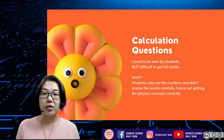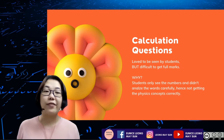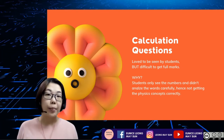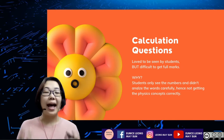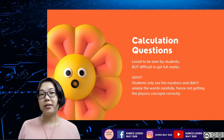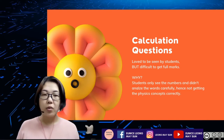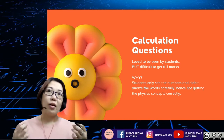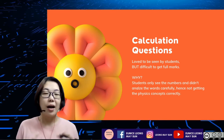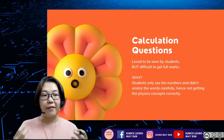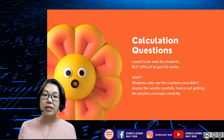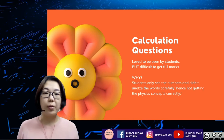It's loved to be seen by students, but it's going to be very difficult to get full marks. Why? Because students only see the numbers; they didn't really go and analyze the words carefully, and hence they don't get the physics concept correctly. Most of the time students know which formula to use, but because the physics concept of the question is not carefully analyzed, they get the substitution wrong, and hence the final answer or the unit will be wrong.